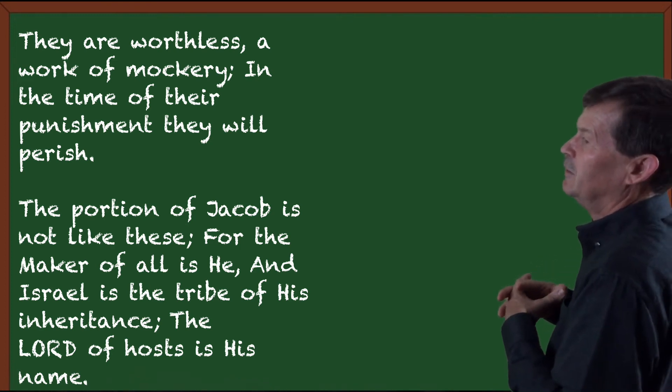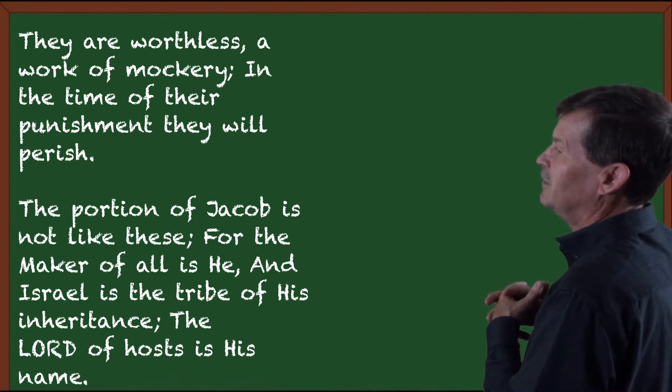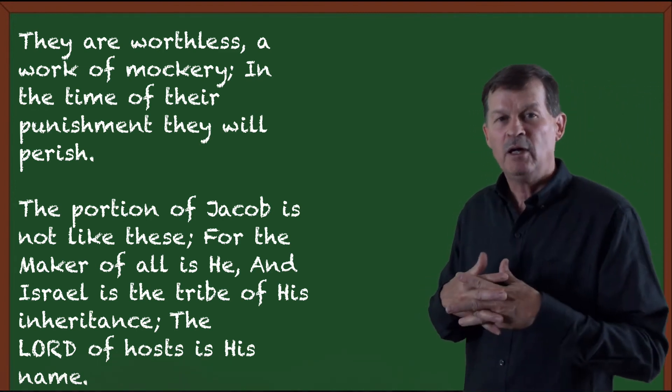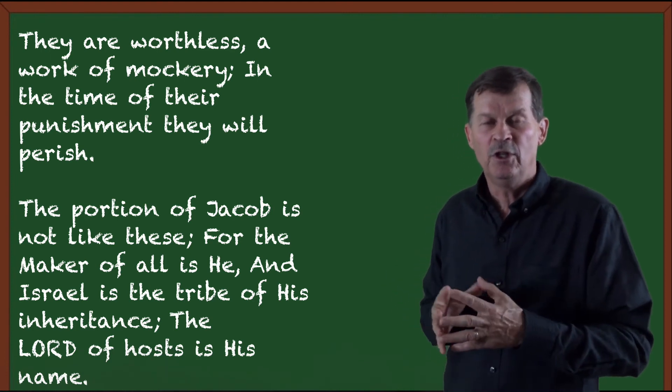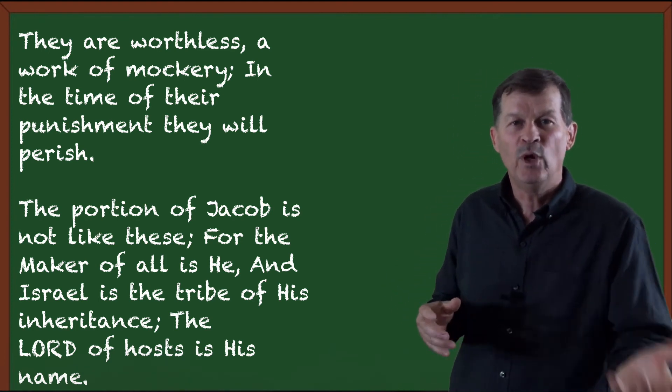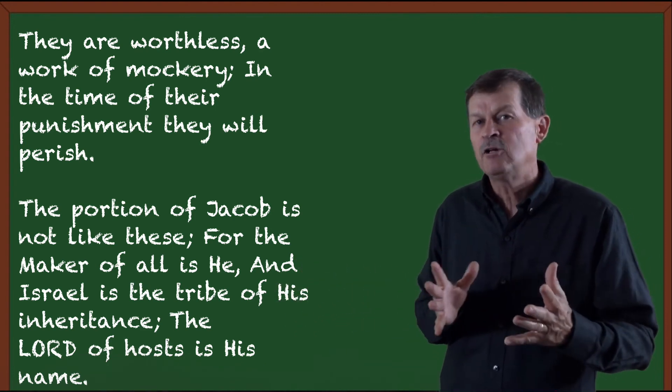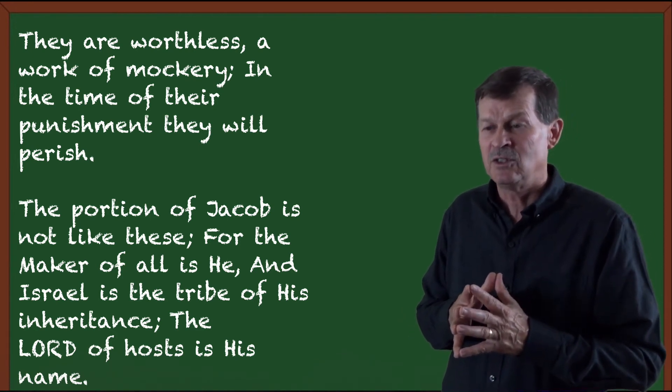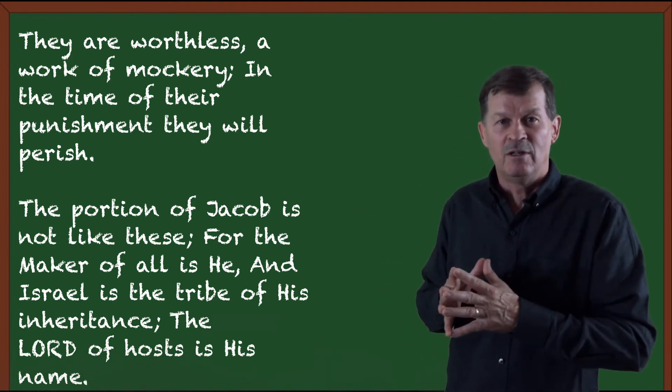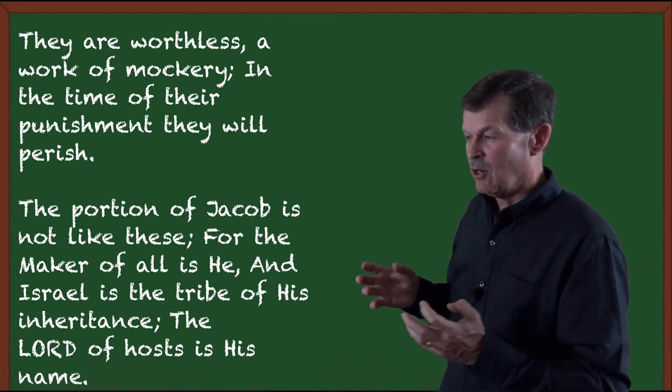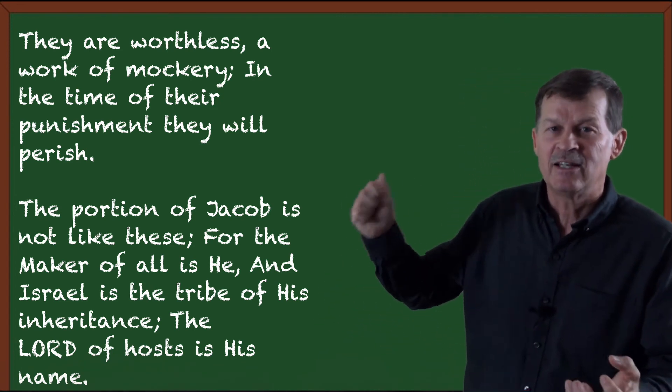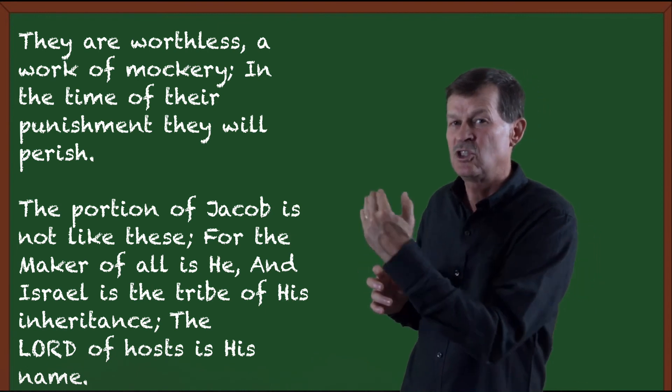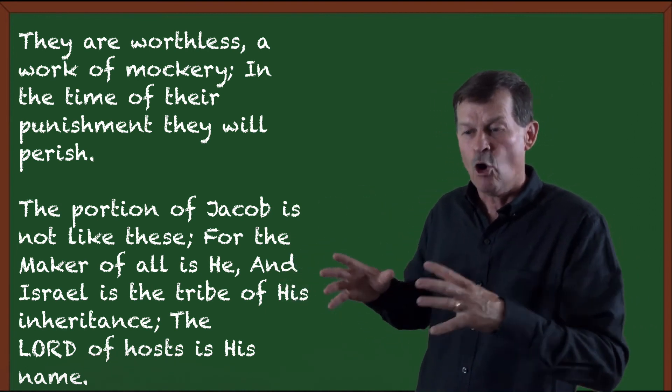In the time of their punishment, they will perish. The portion of Jacob is not like these, for the maker of all is He, and Israel is the tribe of His inheritance. The Lord of hosts is His name. It talks about the God of the Hebrews is involved in their world. Out of His storehouse, He pulls out the rain and the winds. In other words, they aren't natural processes. They are processes that are very common to us, that we see on a daily basis. But in this context, they say, that is God. That is God that ordains, the God that controls, the God that has the storehouses full of Him. So He is not a God that is remote. He is not a God outside of a closed system. He is a God that is present within an open system.